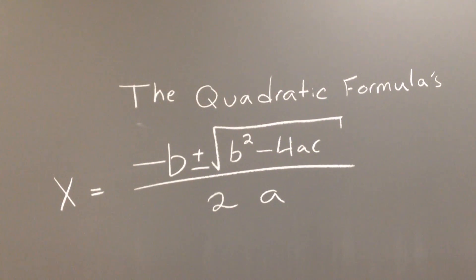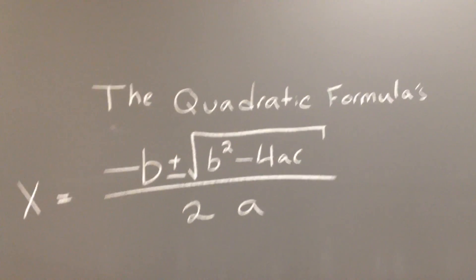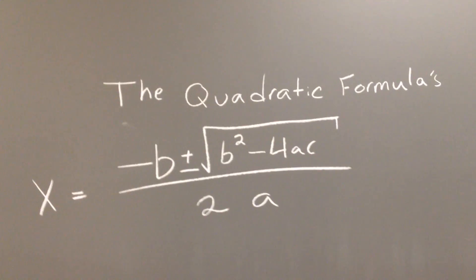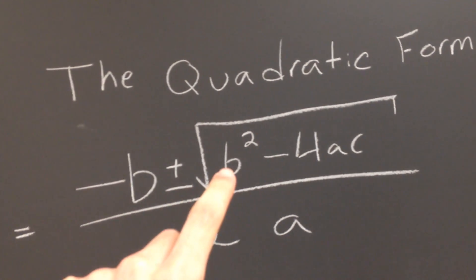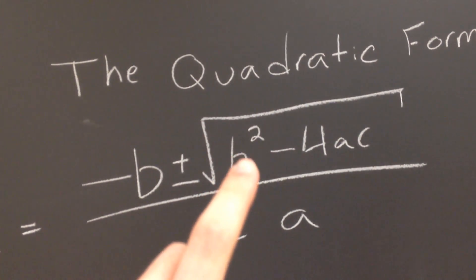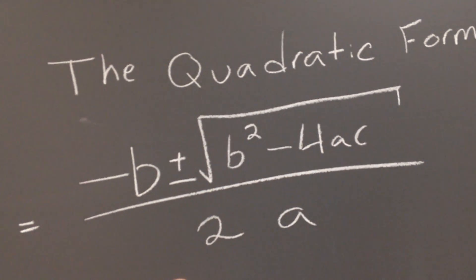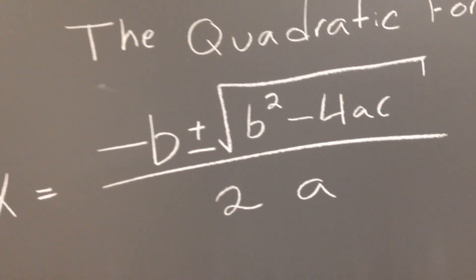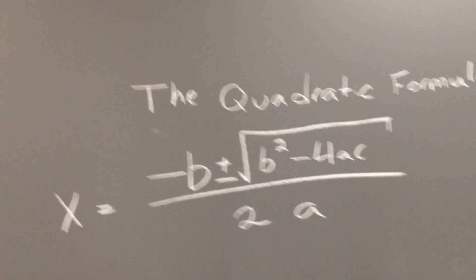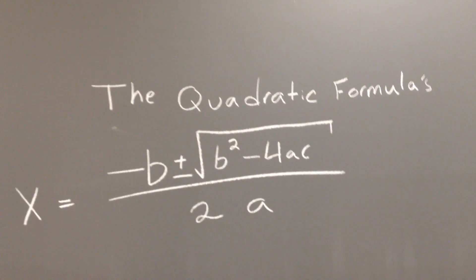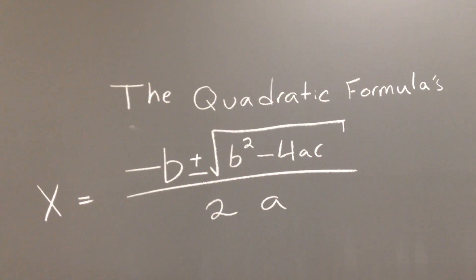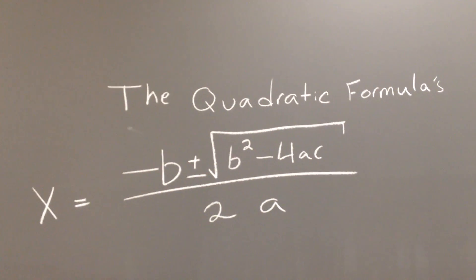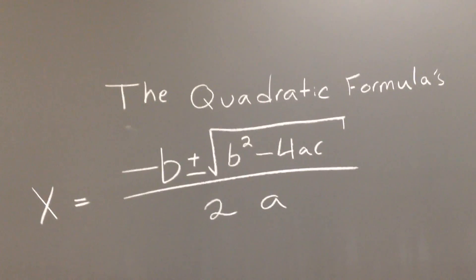Essentially, the quadratic equation lets you solve for roots. The quadratic formula is: negative b plus or minus the square root of b squared minus 4ac, all over 2a. If you guys feel comfortable enough with it, or are willing to earn some extra credit, you can record a video of yourself singing the song and send it to us to prove that you've memorized it.